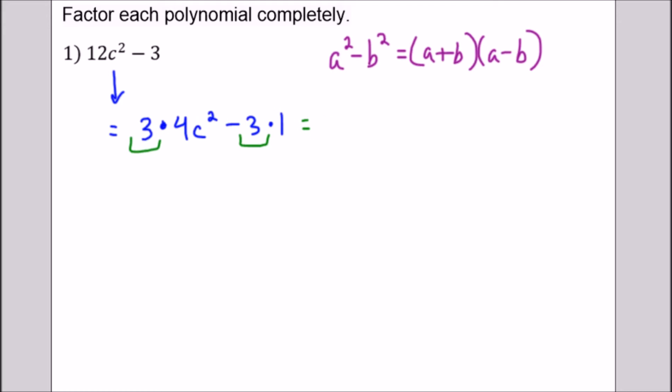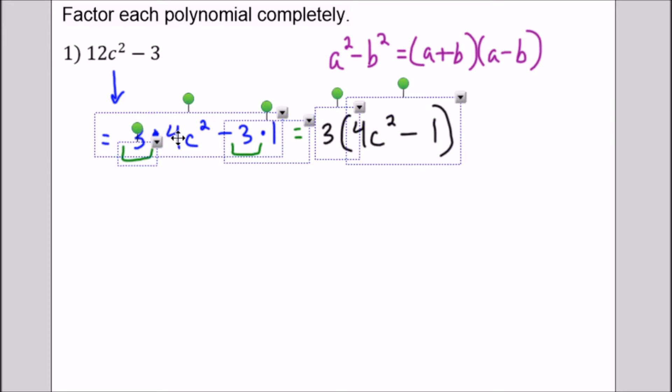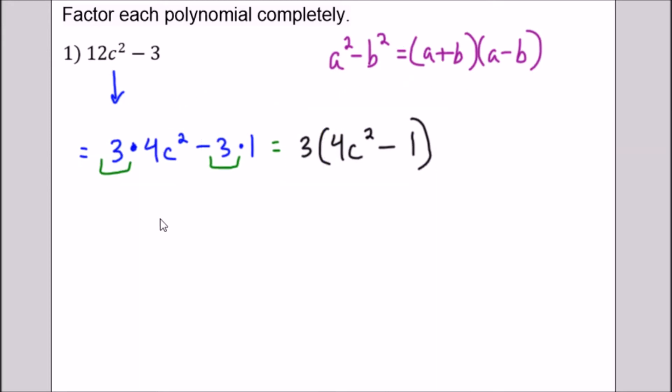So what we do is we write the greatest common factor outside of parentheses and then we write the leftovers. For the first term we have 4c² left and for the second term we have -1 left. Now if we wanted to check that this is still equal we could distribute but this is the factored form of the original expression. But to factor it completely we're going to have to use this difference of two squares idea.